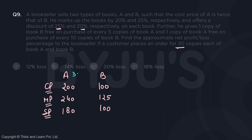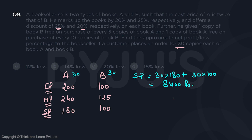When a customer places an order of 30 copies each, the customer is going to pay for 30 copies of A at 180 each, that is 30 × 180, and 30 copies of B at 100 each, that is 30 × 100. So the customer will pay 5400 plus 3000, which equals 8400 rupees.